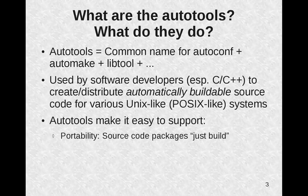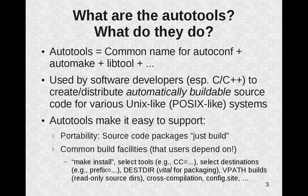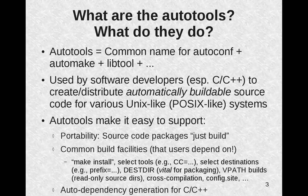The AutoTools make it easy to support portability. Source code packages can just build for a variety of systems — be it all the various Linux distributions, the BSDs such as FreeBSD, OpenBSD, NetBSD, MacOS, Android, and so on. They provide common build facilities that users really depend on: things like make install, the ability to select tools like CC for the C compiler, selecting destinations for installations like the prefix, using destdir which is vital for packaging, VPath builds, cross-compilations, and config.site. The AutoTools also provide automatic dependency generation for C and C++.